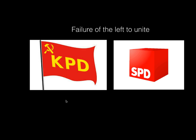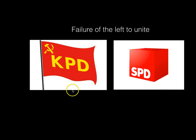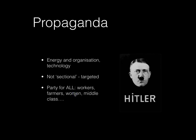The left themselves — the KPD, the Communists, and the SPD, the more moderate Socialists — they failed to unite and recognise the extent of the Nazi threat. Partly because, if you remember, the Social Democrats had used the right-wing paramilitary Freikorps to crush the Spartacist uprising, and the Spartacists became the KPD. So the left failed to unite.